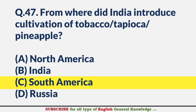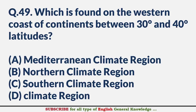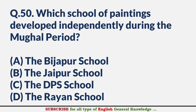When was the Reserve Bank of India taken over by the government? — Answer C: 1949. Which climate is found on the western coast of continents between 30 and 40 degrees latitude? — Answer A: Mediterranean climate region. Which school of paintings developed independently during the Mughal period? — Answer A: The Bijapur school.